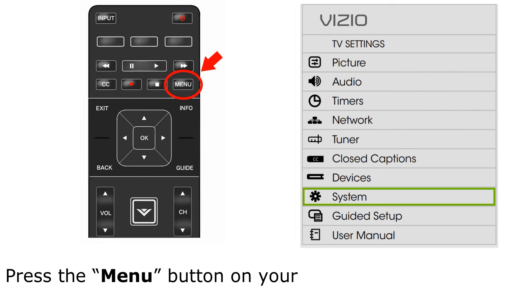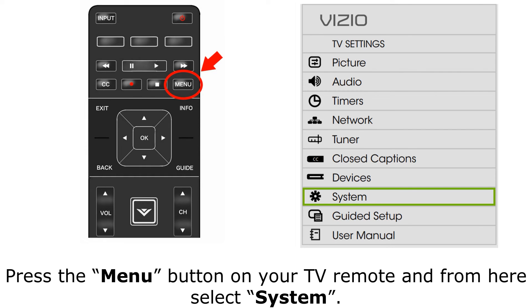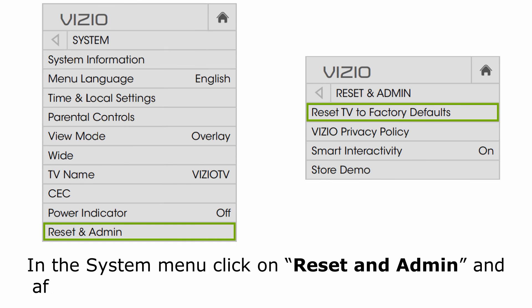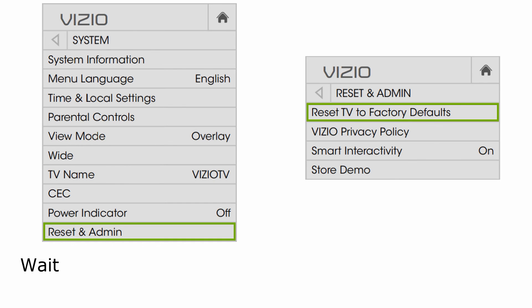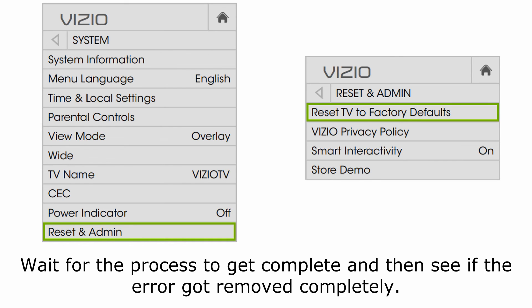Method 3: Perform a factory reset. Press the menu button on your TV remote and from here select System. In the System menu, click on Reset and Admin and afterward click on Reset TV to Factory Defaults. Wait for the process to complete and then see if the error got removed completely.